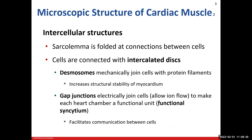A couple other things to look at when discussing cardiac muscle cells — you probably remember those intercalated discs. These discs occur between cells and are made up of two structures: desmosomes, which actually hold the cells together, in addition to other intracellular junctions. They help hold the cells together much more effectively so that when the heart is contracting, we get a much more effective and efficient contraction by increasing the stability of those cells in the myocardium.